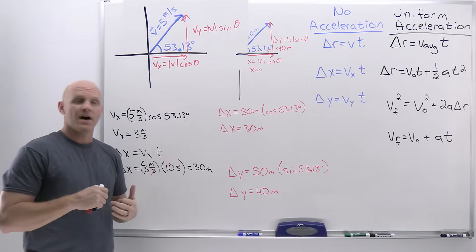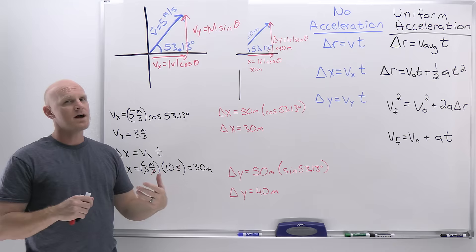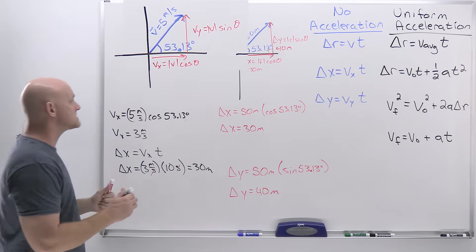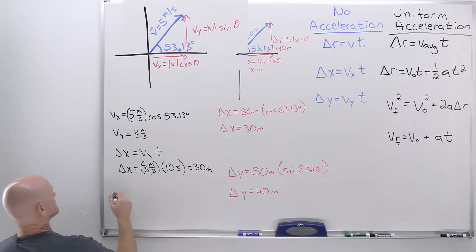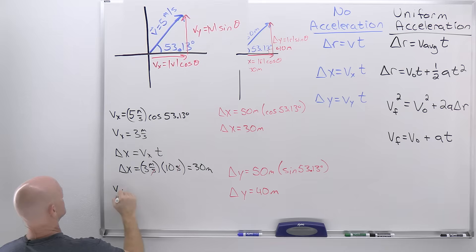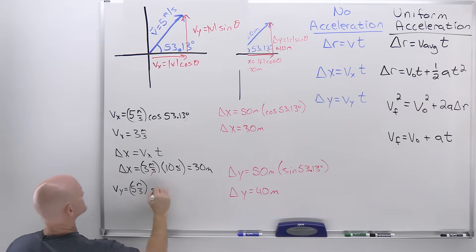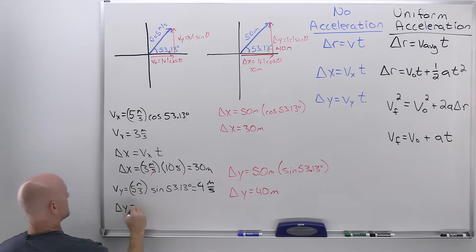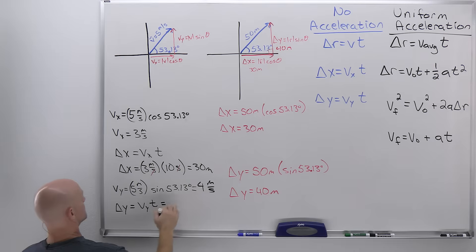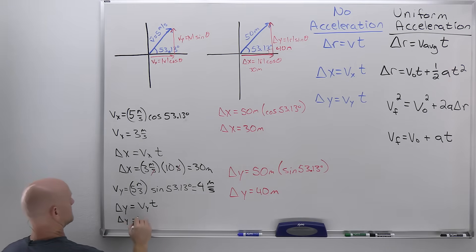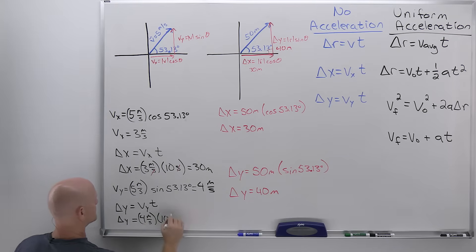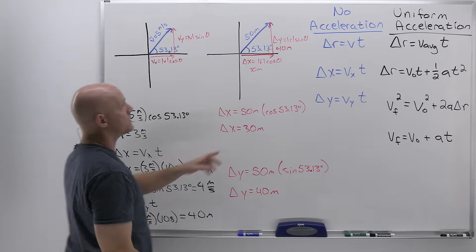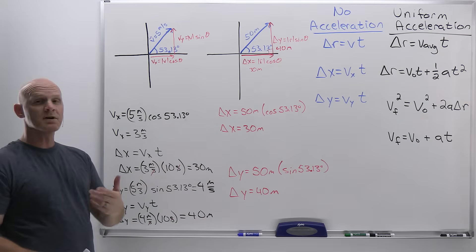The y component of velocity, vy, equals 5 meters per second times sine of 53.13 degrees, which equals 4 meters per second. Then delta Y equals vy times time: 4 meters per second times 10 seconds equals 40 meters. This confirms we can split the velocity vector into components first and then do the math, or do the math first and split into components — either way, the results are identical.